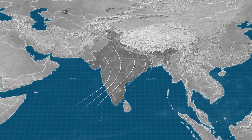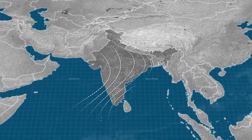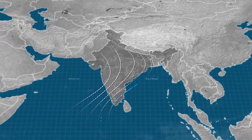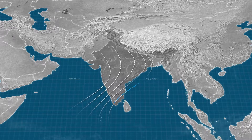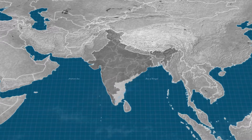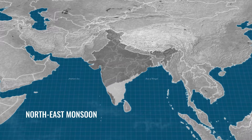When this monsoon retreats, most of it moves over the land, so there is very little rain. One strand, however, moves over the Bay of Bengal where it picks up a significant amount of moisture, which is subsequently released when it moves back over the land. Areas in Tamil Nadu, coastal Andhra and parts of Karnataka get rain from this North-East or winter monsoon.